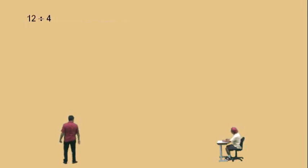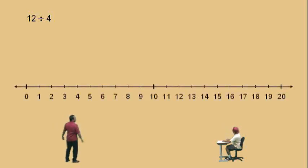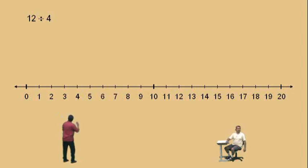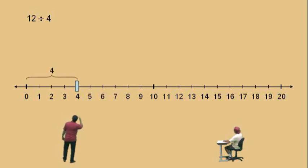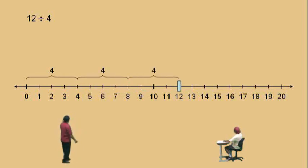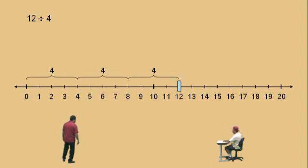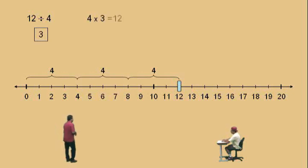All right, here we go, Charlie. Our first problem: 12 divided by 4. Let's go back to the number line. This question — 12 divided by 4 — is basically asking you how many 4s go into 12. Here's one 4, two 4s, and three 4s. What's 4 times 3? 12. That's how we did our multiplication. How many 4s does it take to make up a 12? 3 of them. So 12 divided by 4 is 3, because 4 times 3 is 12. Think about that.